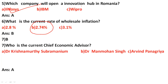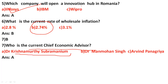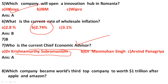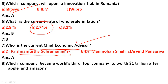The correct answer for the current wholesale inflation rate is option B: 2.74 percent. Next, who is the current Chief Economic Advisor? The options are Dr. Krishnamurti Subramanyam, Manmohan Singh, and Arvind Panagariya. The correct answer is option A: Dr. Krishnamurti Subramanyam.